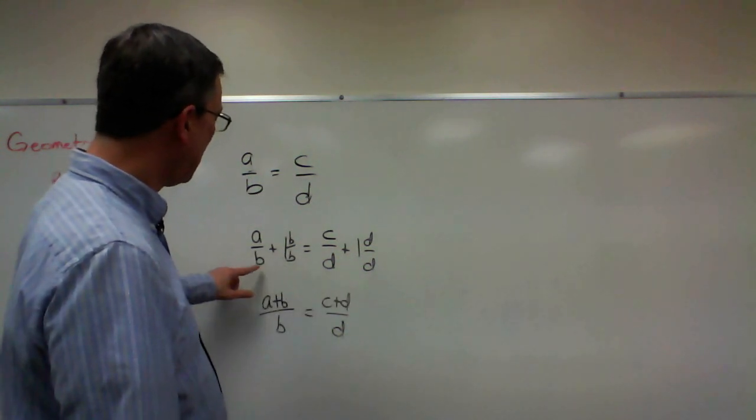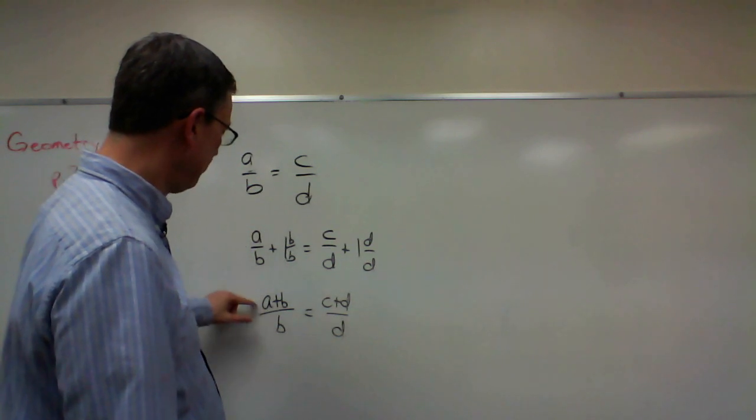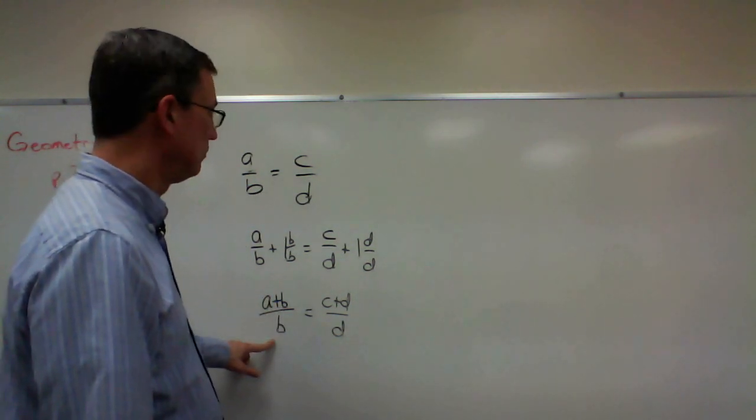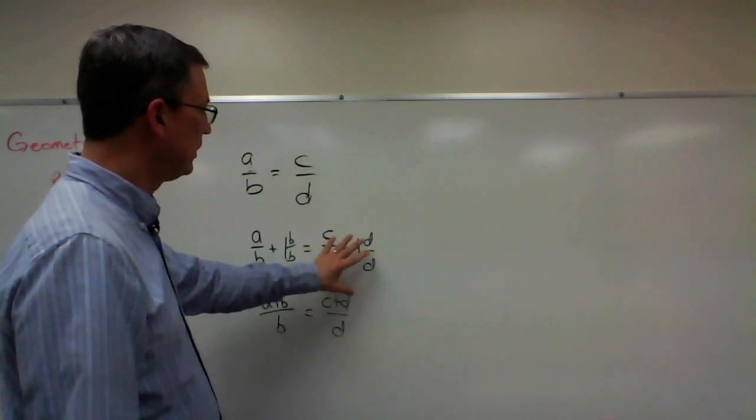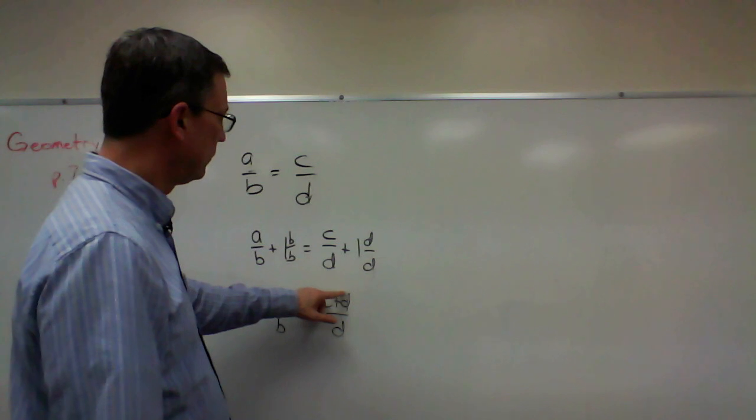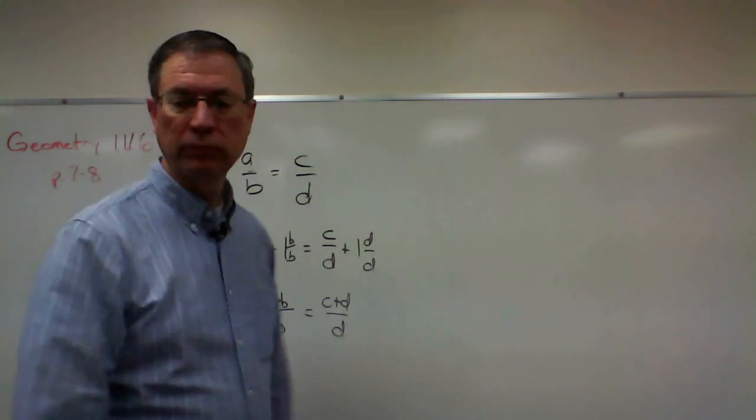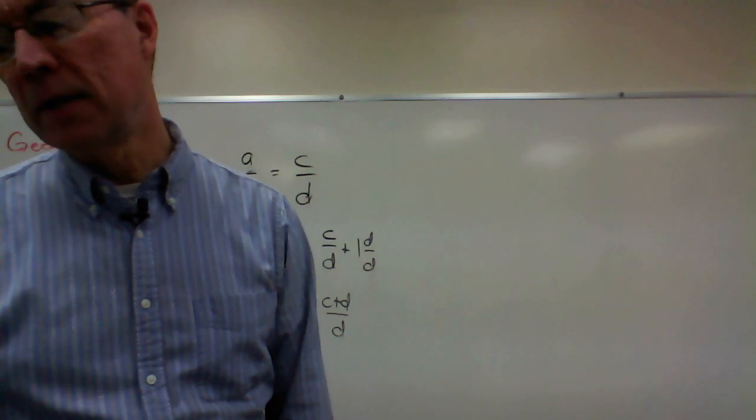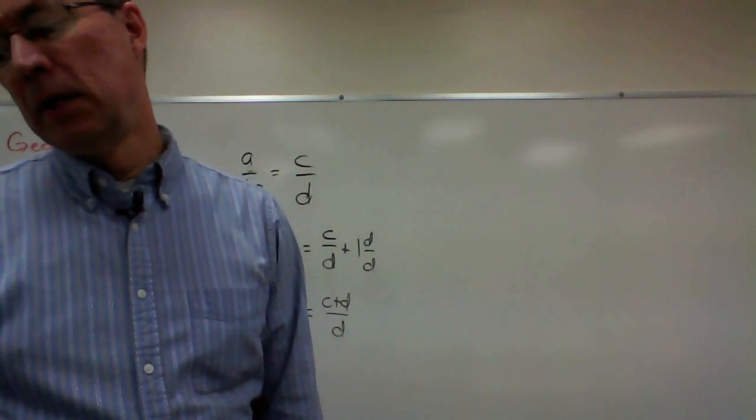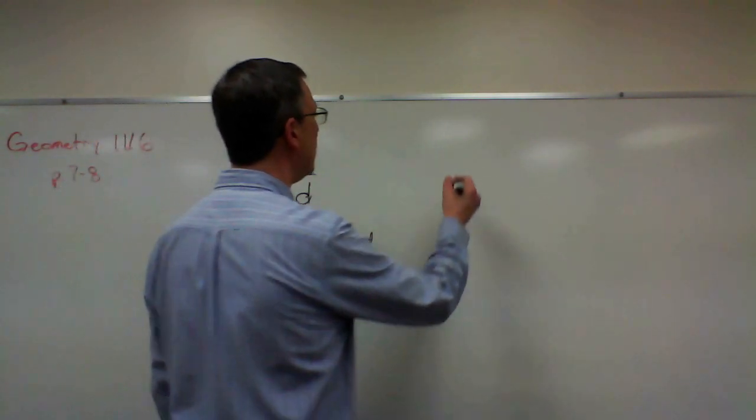And so then we could simplify this and say A plus B over B equals C plus D over D. So all we've done is basically added whatever the denominator is to the numerator. Add the denominator to the numerator, keep it over that denominator. Do the same thing on the other side. Let's try it with the fraction here, 5 over 2 equals 30 over 12.